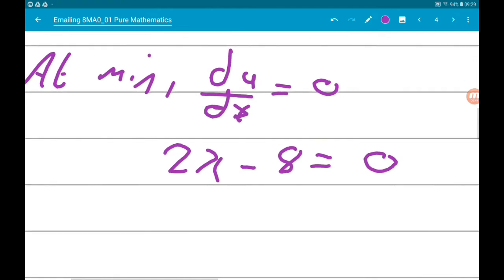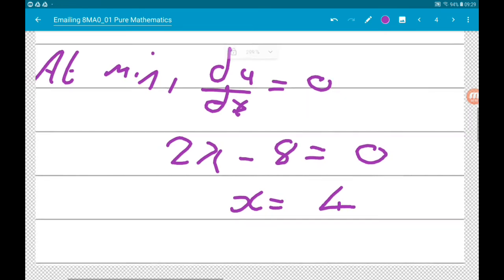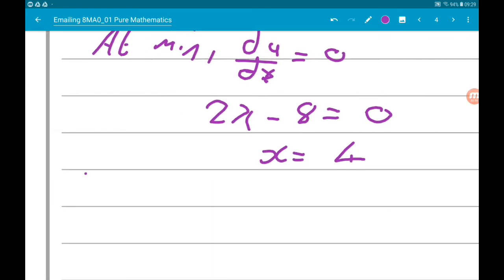Add the 8, divide by 2, x is equal to 4. Now, when x is equal to 4, y is equal to 4 squared minus 8 times 4, plus 17.